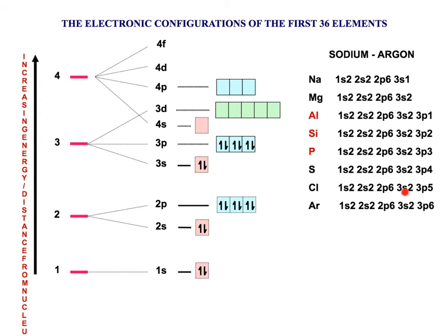The next few elements just fill up as you would expect, all the way up to argon. You just keep filling up, making sure that when you get to the P subshells they fill up one electron in each orbital first and then backfill.